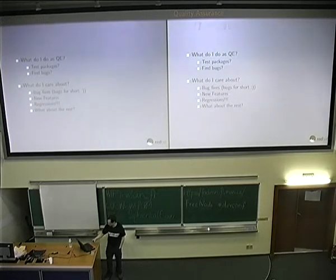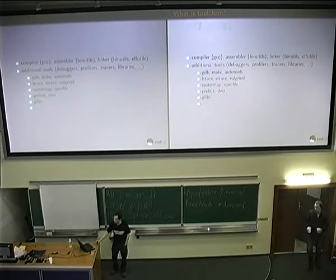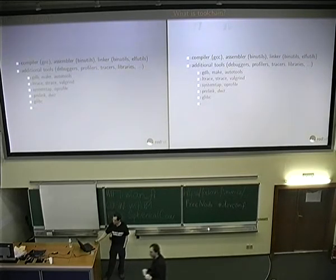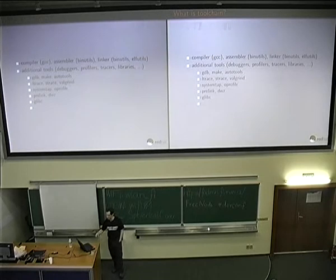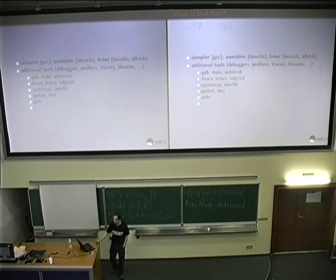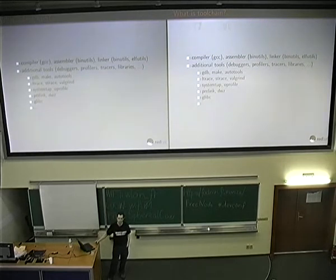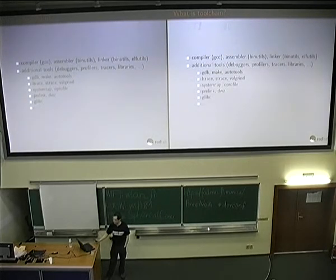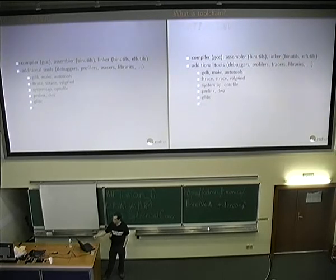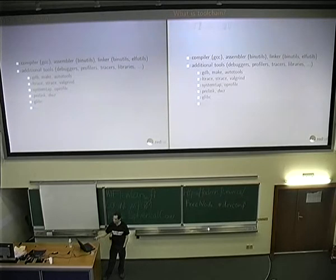What is a toolchain? Maybe you know, but I'll remind you. Toolchain is the thing that allows you to build your application from source code. It's typically a compiler, assembler, and linker. But of course this is not enough for programming these days, so there are additional tools: debuggers, tracers, profilers, memory error detectors, and so on. I have just a few examples on this slide; there are many more programs.